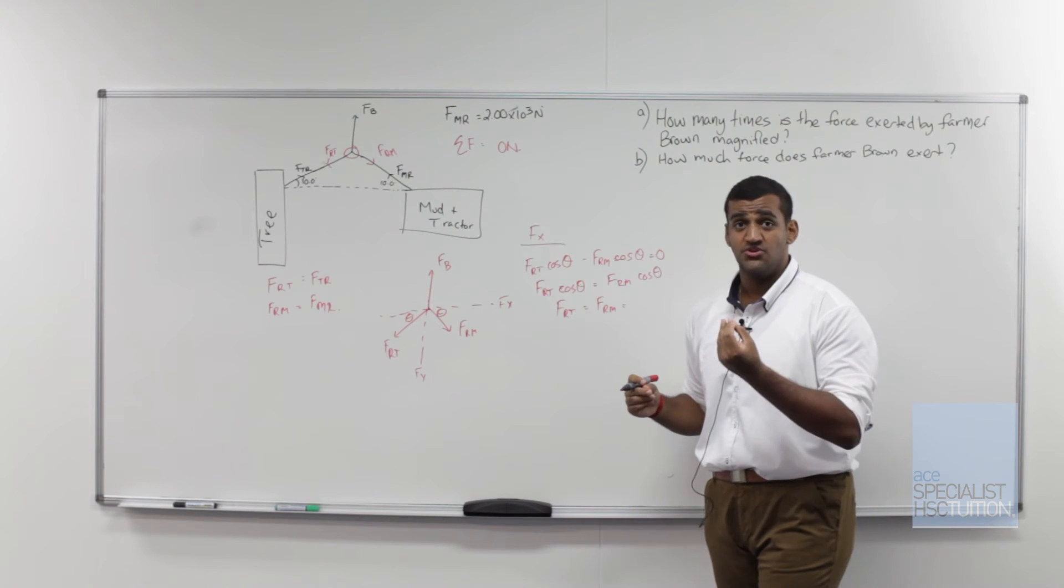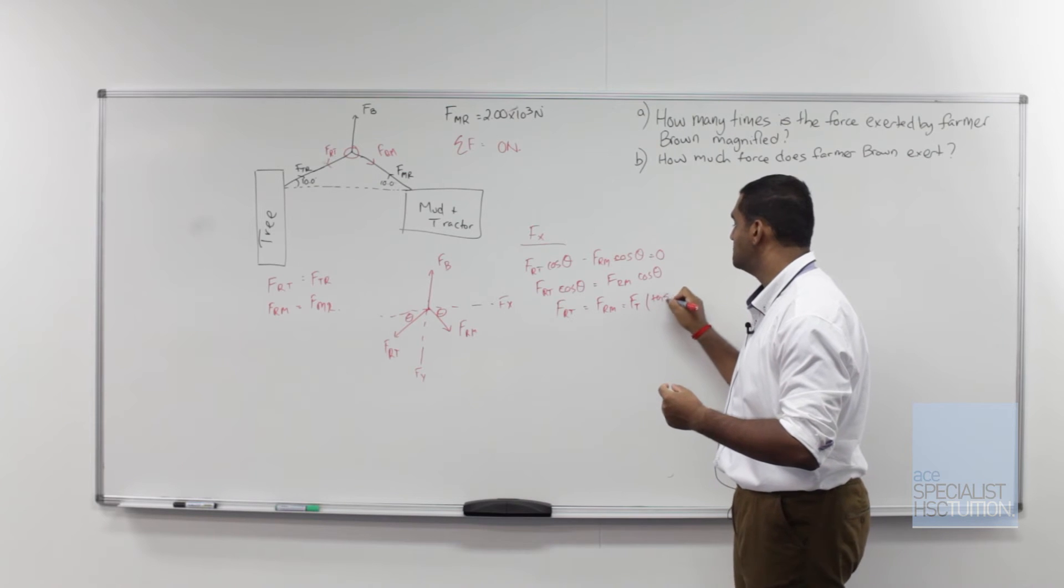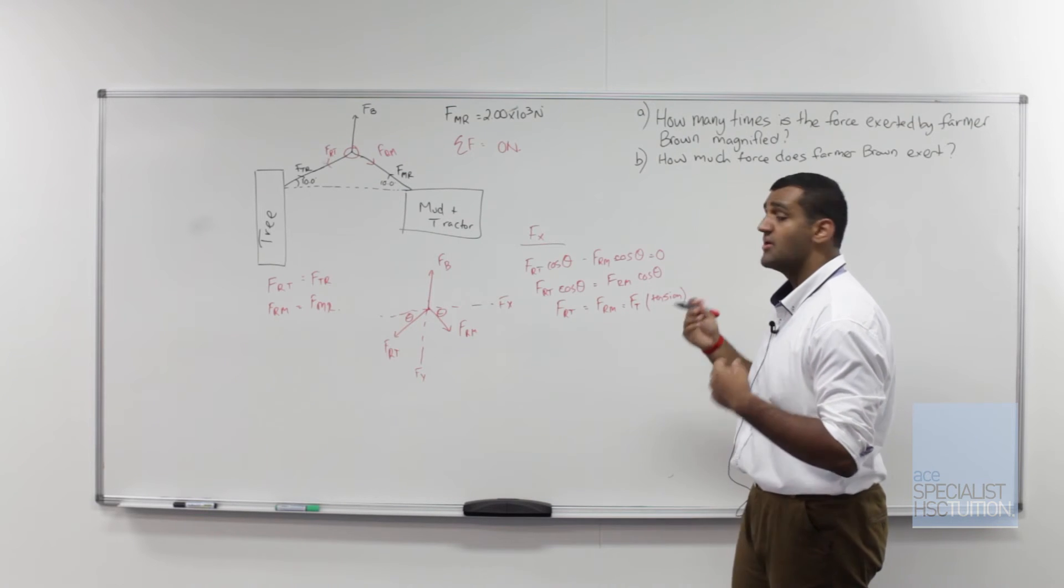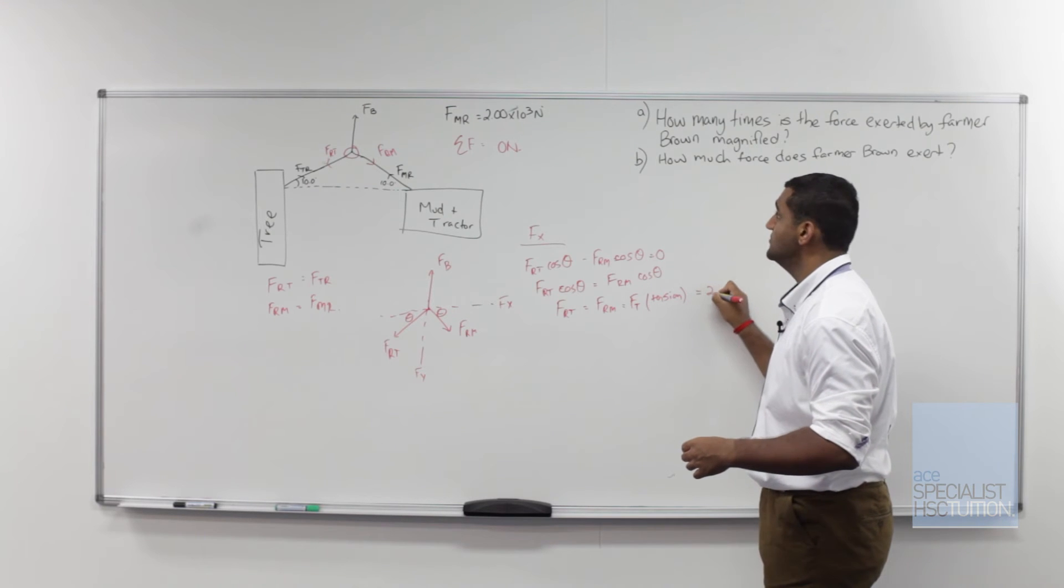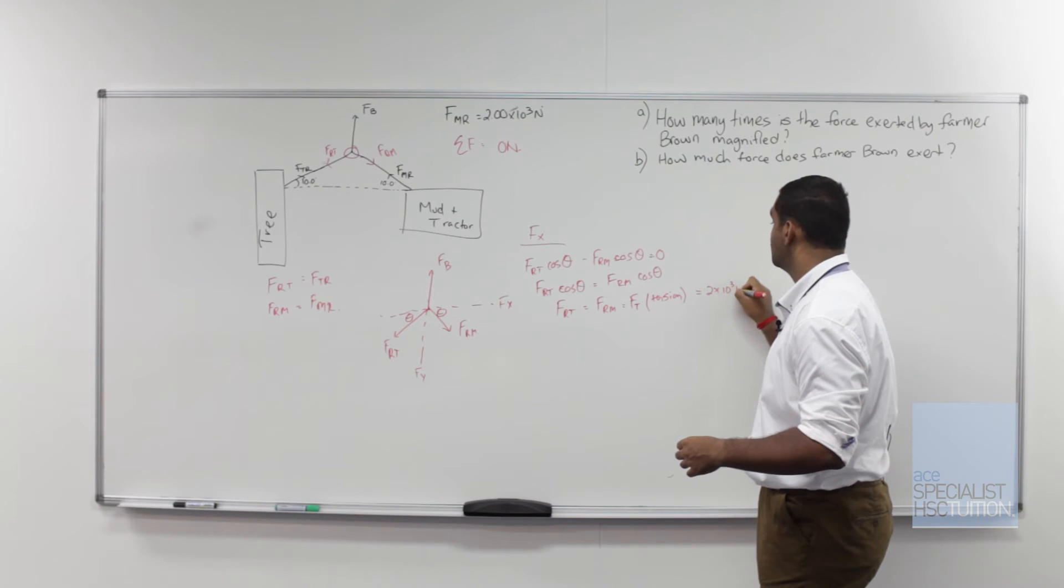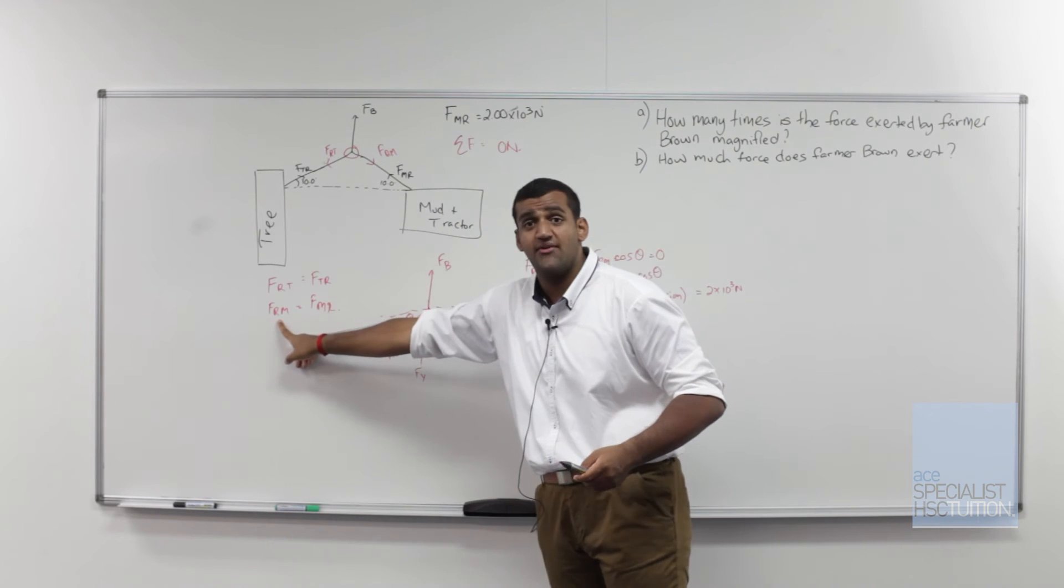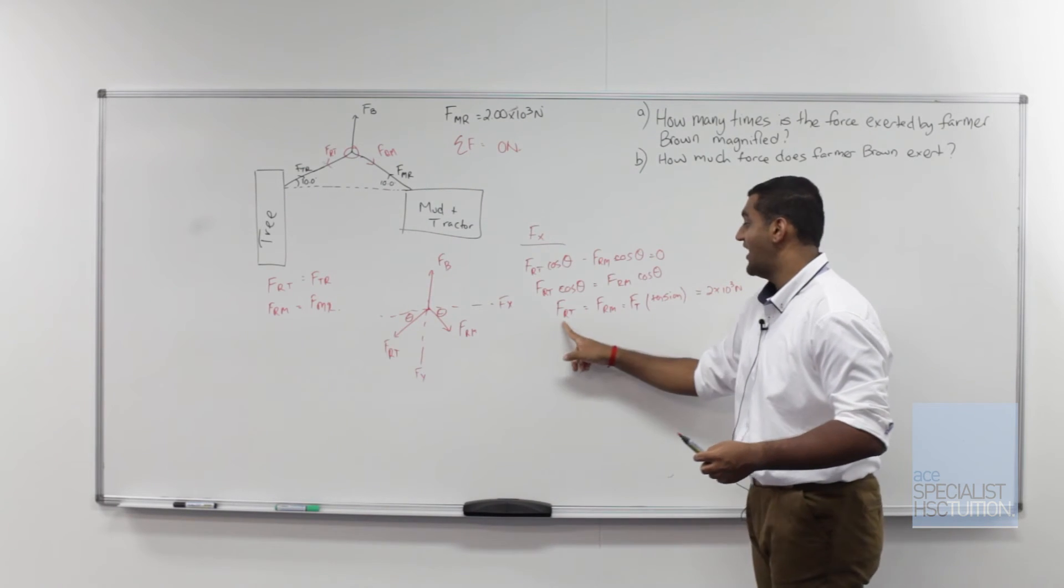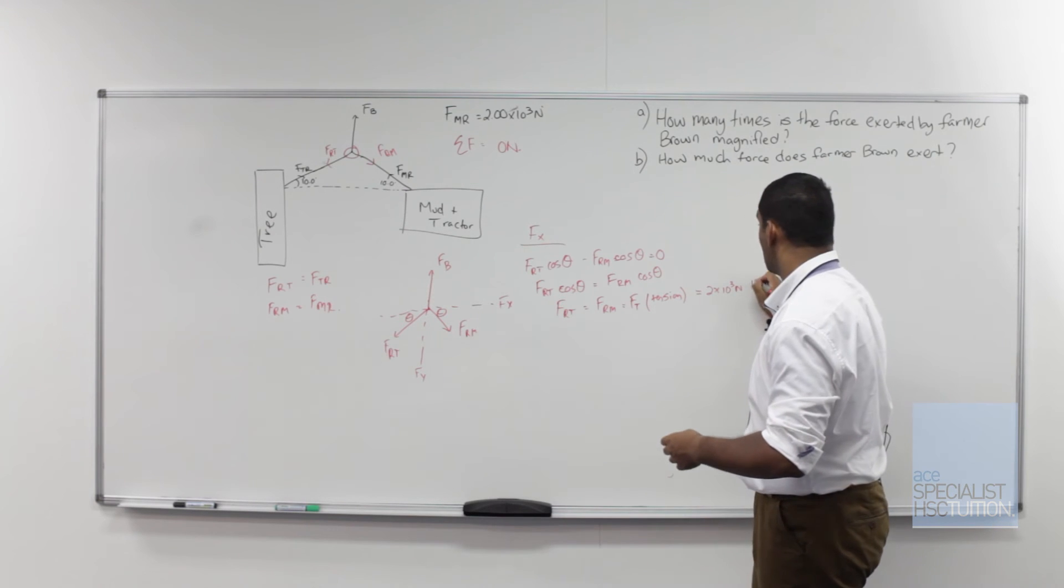So from here the next step down is just equating, cancelling out the cos thetas, and we get FRT equals FRM. Now let's just label this a new variable called FT, T just standing for tension. We know that all these forces are equal, so all these forces are actually equal to 2 times 10 to the 3 newtons because we know that FMR here is equal to FRM and FT and FRT are also equal to FRM. So this is our first equation here.